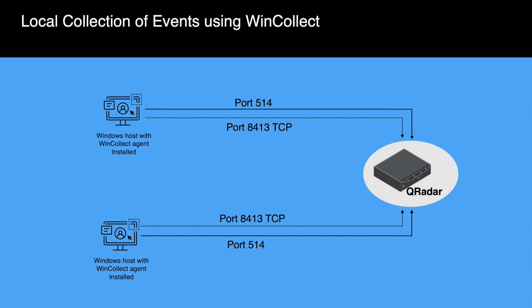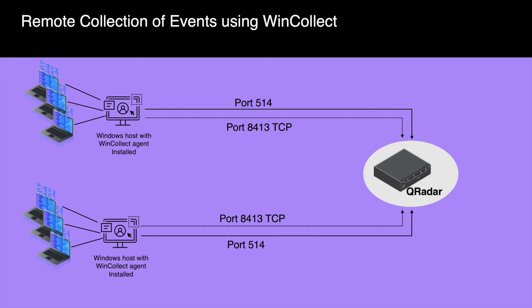There are two ways by which the Windows host can gather event information: local event collection and remote event collection. In the local collection method, the agent collects events for the Windows host on which it is installed. In the diagram, we can see that the connection between a locally installed WinCollect agent and IBM QRadar requires port 514 to be open towards the status server and port 8413 to be open towards the configuration server. In remote collection, the WinCollect agent is installed on a single host and collects events from multiple Windows systems. We use remote collection to easily scale the number of Windows log sources that you can monitor. It also has the same basic port requirements: 514 and 8413.